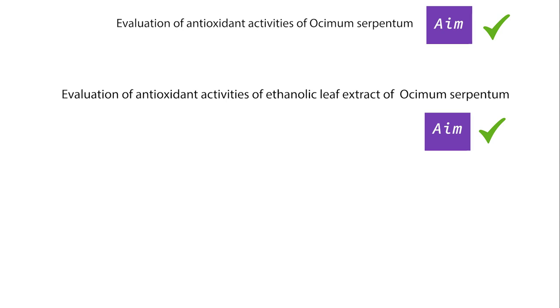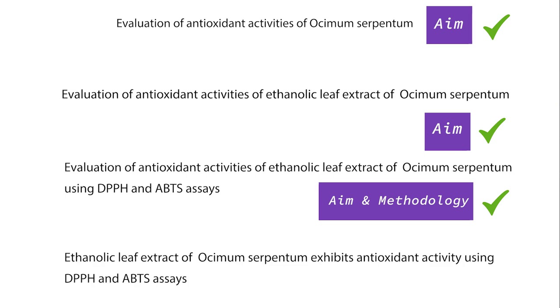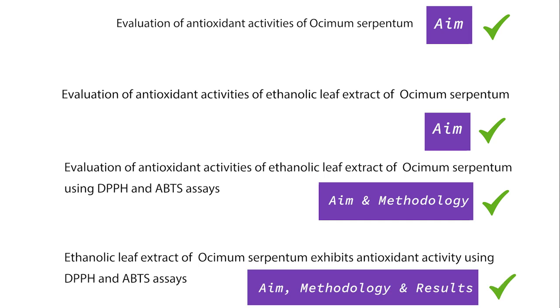Let us see how we can modify this title. How about Evaluation of Antioxidant Activities of Ethanolic Leaf Extract of Osimum Serpentum. This sounds better, right? No. It can further be modified. Evaluation of Antioxidant Activities of Ethanolic Leaf Extract of Osimum Serpentum using DPPH and ABTS assays. Now, we know what was done and how it was done. But it still does not say anything about the result. So, how about this? Ethanolic leaf extract of Osimum Serpentum exhibits antioxidant activity in DPPH and ABTS assays. Perfect. All the information needed is available in this title. That is, the aim, the methodology, and the result.